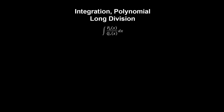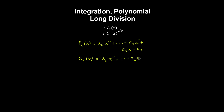Suppose we have the integral of a rational polynomial function. The polynomial in the numerator can be written as follows, and similarly we can write the polynomial in the denominator as follows. For the case where the degree of the polynomial in the numerator is greater than or equal to the degree of the polynomial in the denominator, we can apply polynomial long division to simplify the integral by rearranging it into an equivalent form.